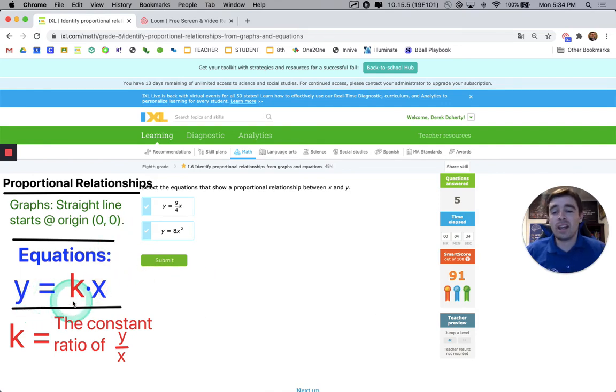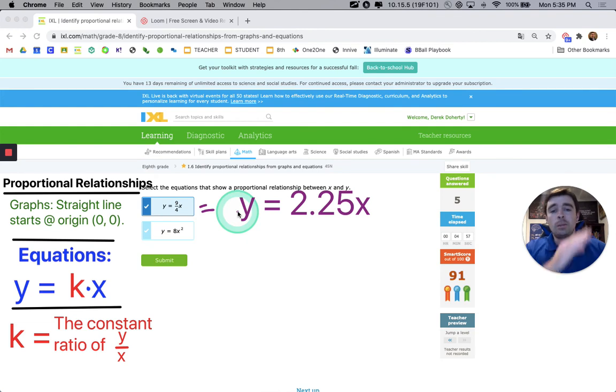A couple things to catch here. Y equals KX means the constant doesn't have to be a whole number. It could be a fraction. So Y equals 9 over 4, which is the same thing as 2.25. We'll go ahead and mark the screen up a little bit. 9 over 4 is the same thing as 2.25. So you can just type that better. Y equals 2.25X. And that is going to be a straight line that Y goes up 2.25 every time we get one more X.